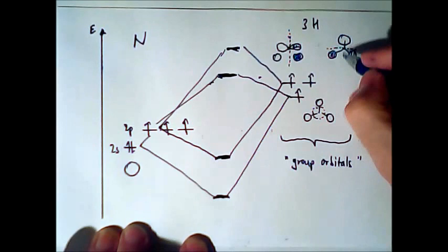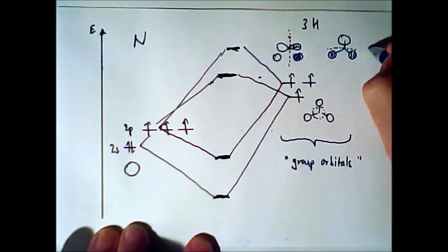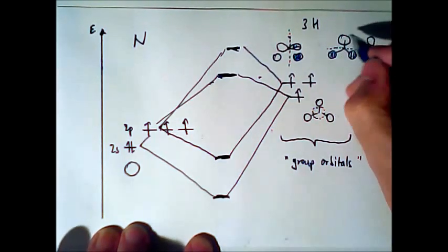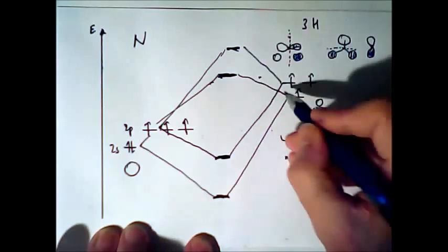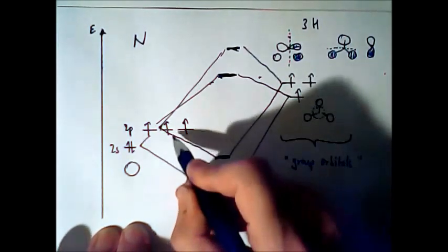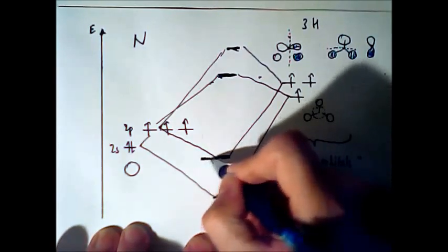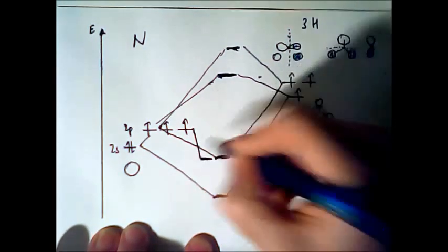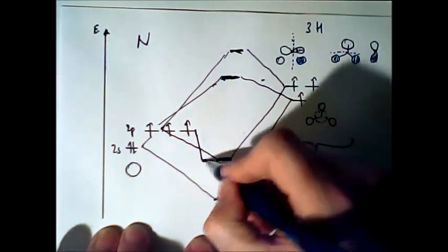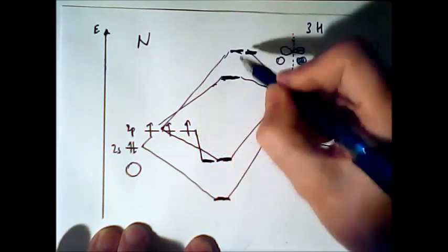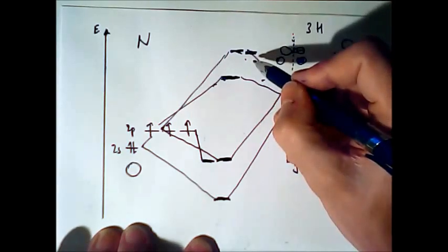And in the same way, the py orbital of the nitrogen, I'll just draw it here, fits together with this orbital. And these are on the same energy. These are on the same energy. So we can assume that the combination of these two will be also on the same energy. And here also. So we get anti-bonding here.